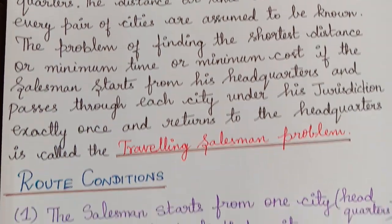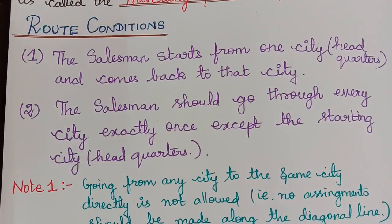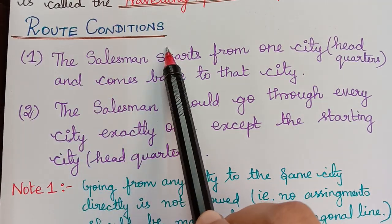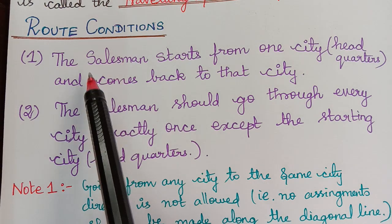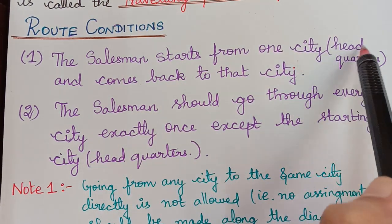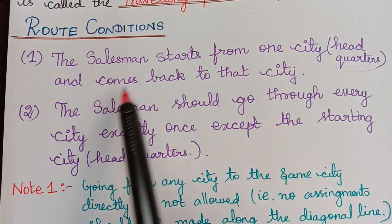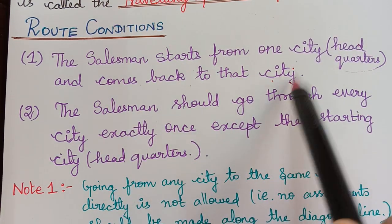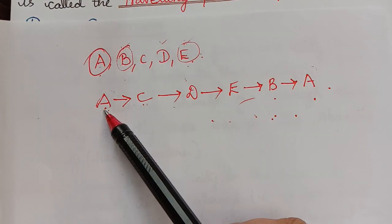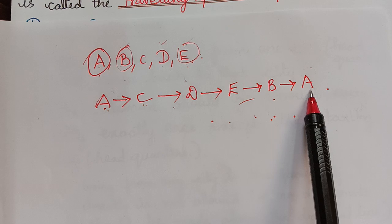There are two main route conditions for this problem. The conditions are: the salesman starts from one city and that city is known as headquarters and comes back to that city again. So that is what I showed you here. He started from city A and he came back to city A again.